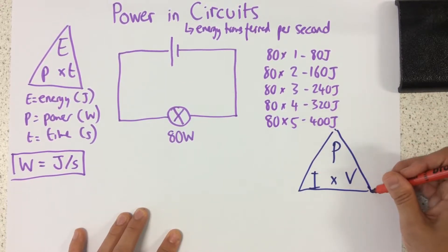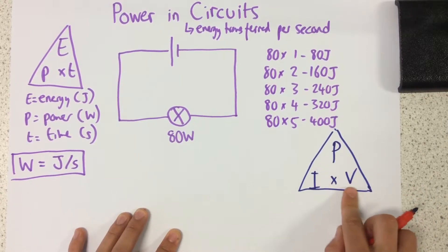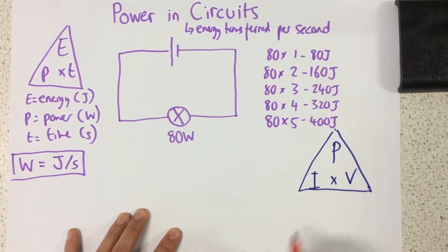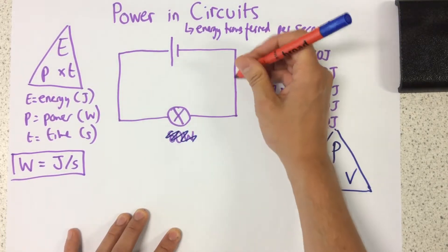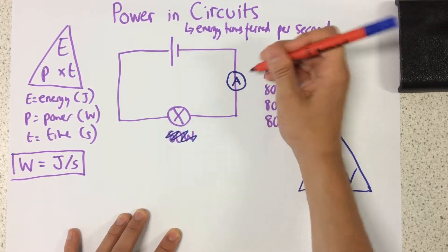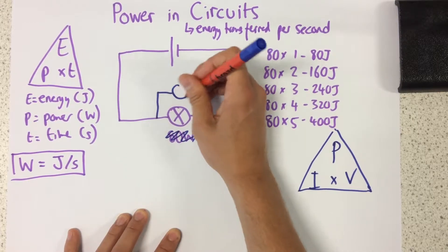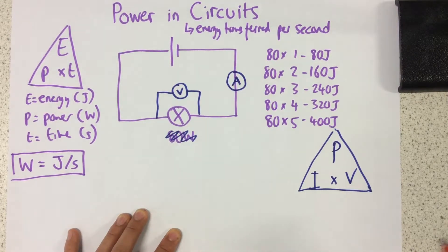Now what that is showing is our power equals our current times our voltage. Now let's have a think of what that means. Let's just quickly have a think about this circuit here. Let's imagine if I've got an ammeter right here and I've got a voltmeter here to measure the potential difference.